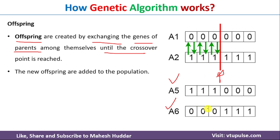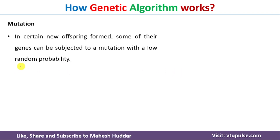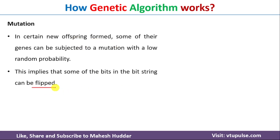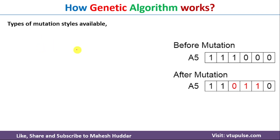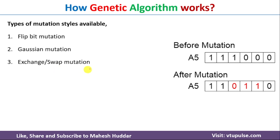Sometimes we also apply mutation with a very low random probability, where we flip the genes of the offspring. For example, A5 before mutation looks a certain way; after mutation, three bits are flipped — 1 is changed to 0, 0 is changed to 1, and so on. There are multiple mutation methods: the first is flipping, the second is Gaussian mutation, and the third is exchange or swap mutation. These will be discussed in the next video.